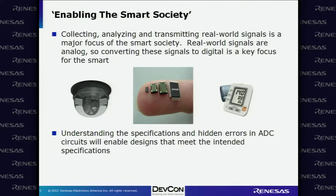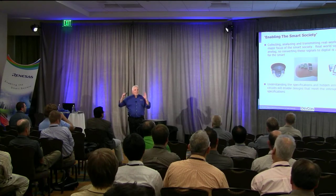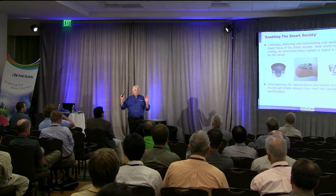The theme of DevCon being a smart society — what we're trying to do now is collect and send more information about what's going on in the world than ever before. Everybody knows we've got an analog world, but our communication schemes are all digital. So we're always going through this conversion from analog to digital back to analog. In some cases we're concerned with being extremely precise, in other cases like video or audio, which is very forgiving, a little data dropout is acceptable.